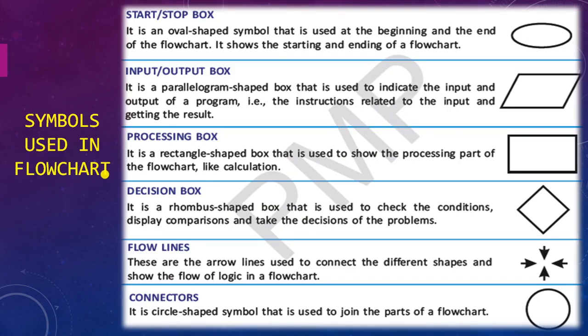Let's see what symbols we use in flowcharts. In the algorithm we had start and stop; here also we have start and stop but we use a different thing, an oval shape. For input output box we use a parallelogram.